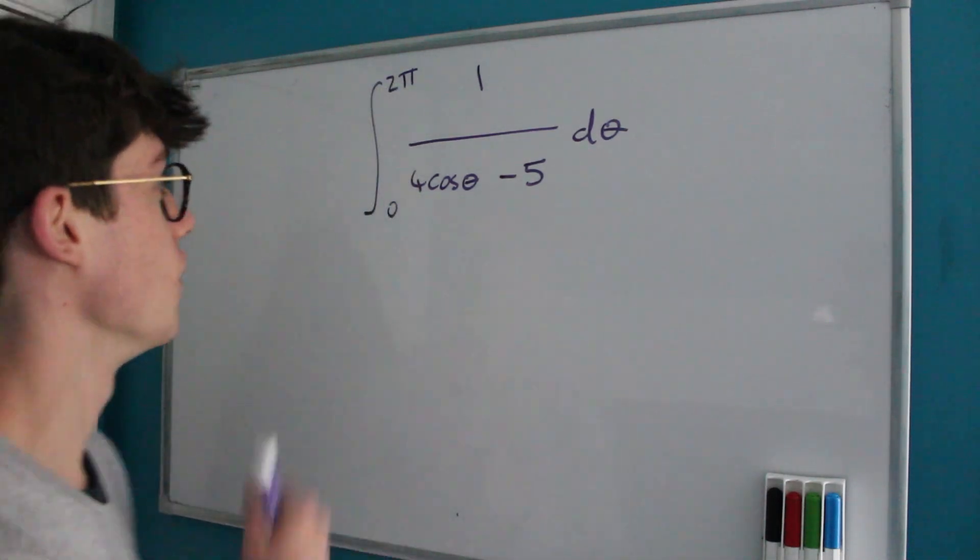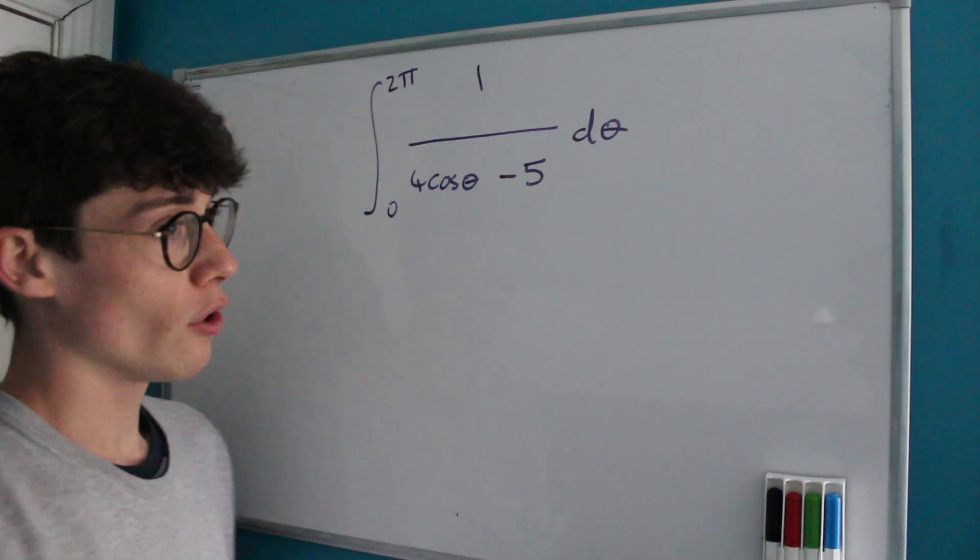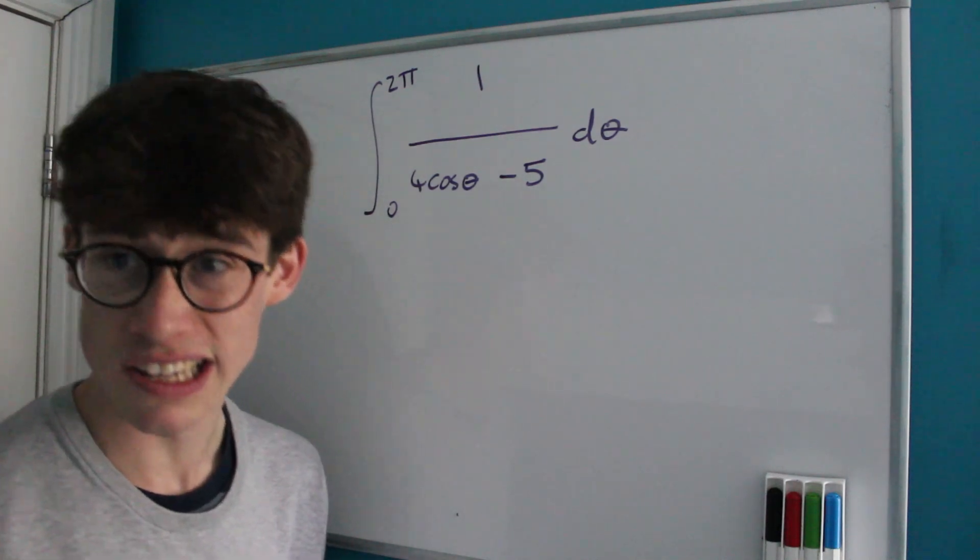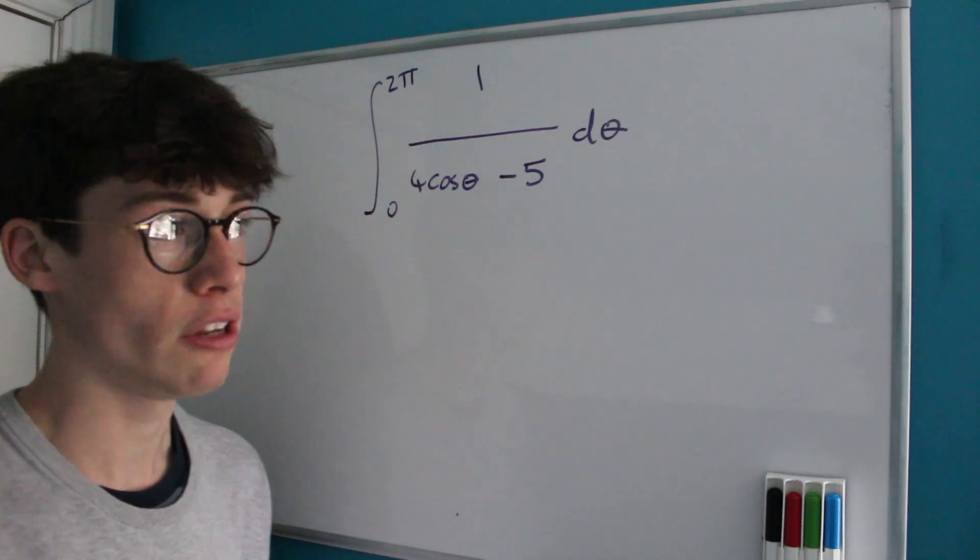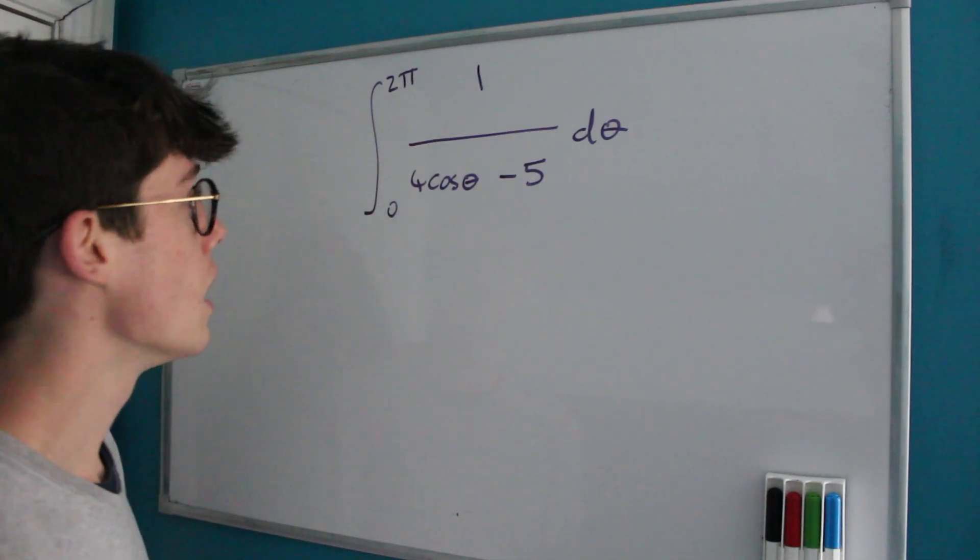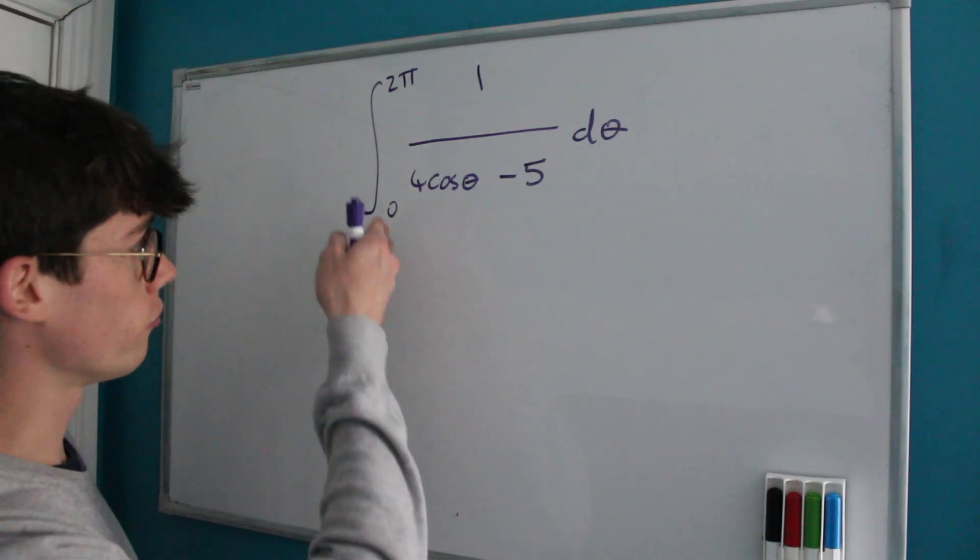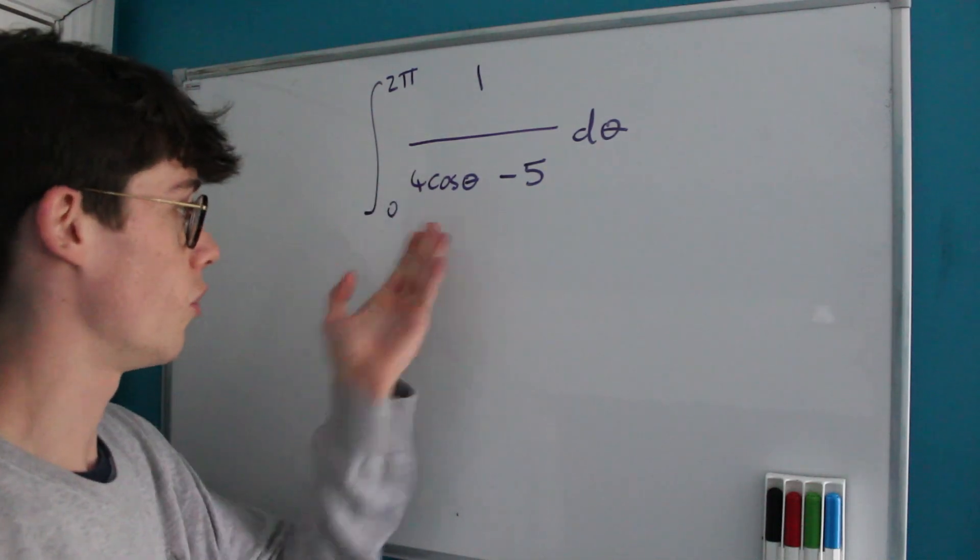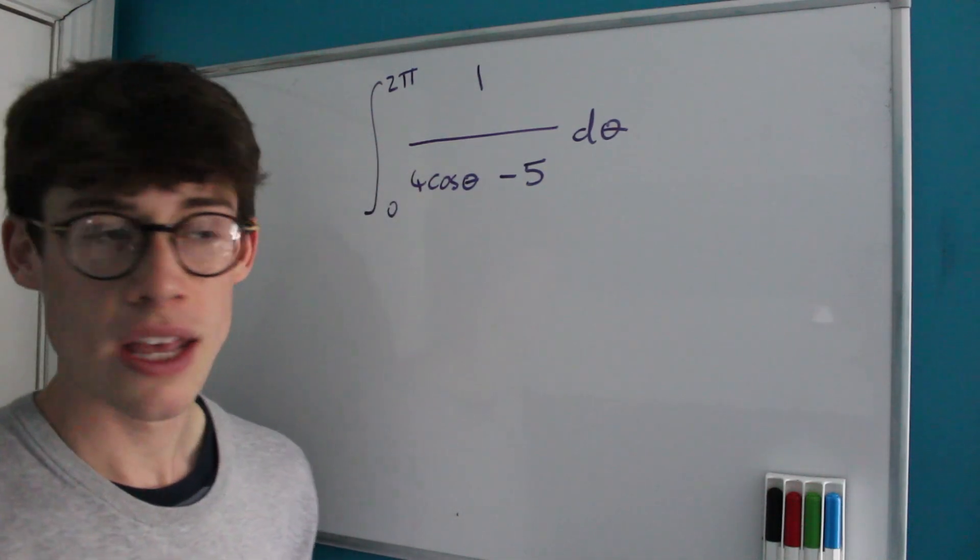So how are we going to solve this integral? Well, of course we could use trigonometric identities and that is one approach to this. It will leave us with an arctan integral and I'll leave you guys to perhaps have a look at that if you want. But what I'm going to notice is that we're going from 0 to 2π and that we've got a cosine here.